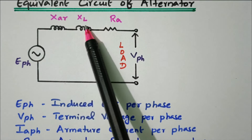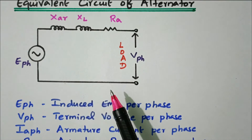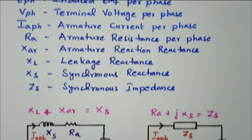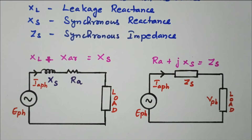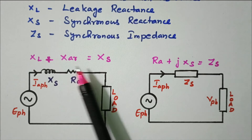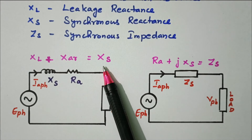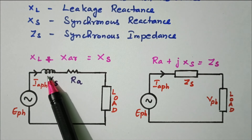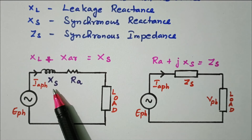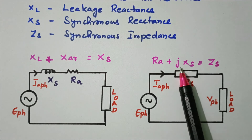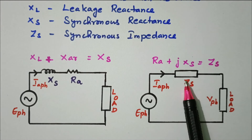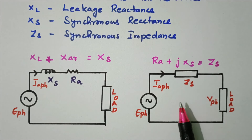The next step is to add XL and XAR — the leakage reactance and armature reaction reactance. Adding these gives XS, the synchronous reactance. So XL and XAR are replaced by a single reactance XS. Then XS plus RA — that is RA + jXS — is nothing but the synchronous impedance ZS. These two terms are replaced by the synchronous impedance.